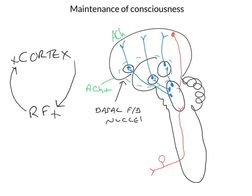We have a very clear and powerful positive feedback loop occurring here, and all of these synapses in these nuclei are cholinergic. Acetylcholine is a very important neurotransmitter in the maintenance of consciousness. The hypothalamus sends histaminergic projections up to the cortex — histamine is the transmitter there, and these are excitatory. The thalamus sends glutamatergic inputs up to the cortex, and as you know, glutamate is also excitatory. So what we've got is a whole load of excitatory neurotransmitters being released in the cortex to maintain wakefulness.